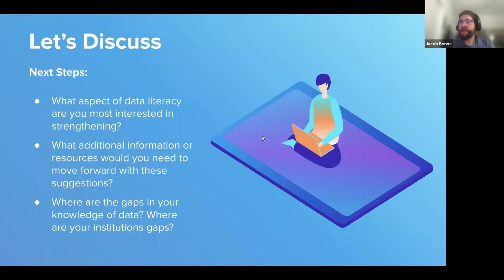I wanted to just sort of provide this as an overview for discussion. What are some of the aspects of data literacy that we've talked about today or not talked about today that you are looking to strengthen? What are some additional information or resources that you would need to kind of move forward with the suggestions provided or whatever areas of data literacy you're interested in exploring? As we talked about in the last session, it's hard to know what you don't know. But what additional gaps might there be in your knowledge of data? And perhaps even on the institutional level, what are some gaps and how might you address those? I'll turn it over to the group to see if there's any thoughts here for discussion.